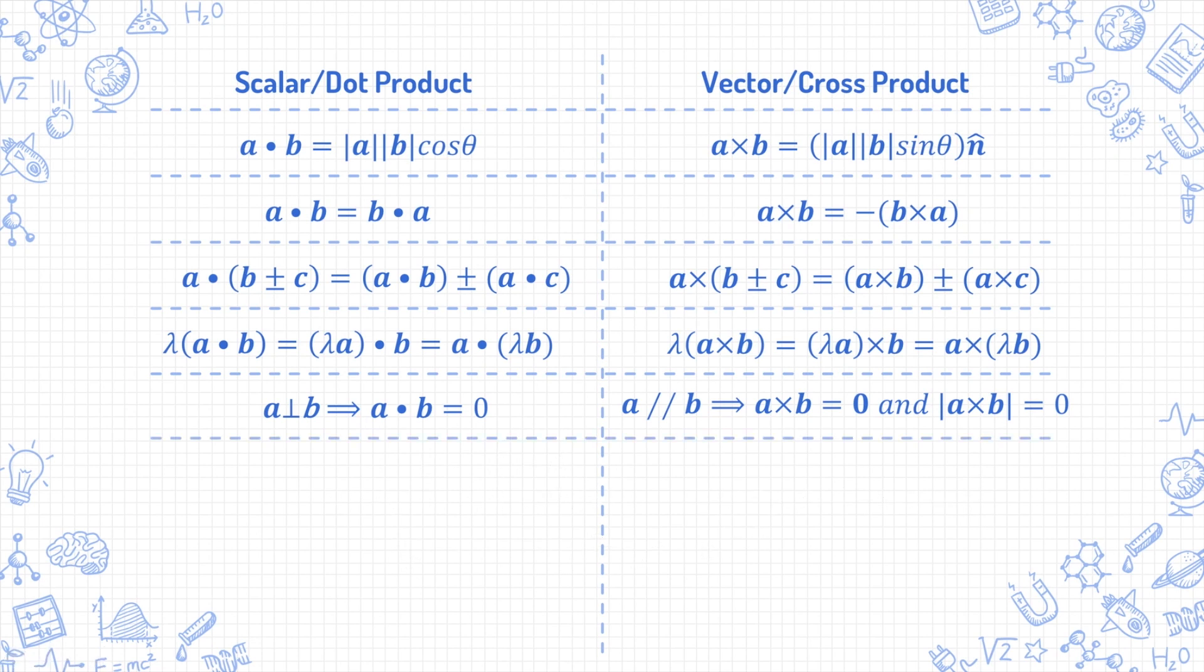What happens when you take the dot product of a vector with itself or the cross product of a vector with itself? The angle theta between a vector and itself is 0 degrees. So, if you take a dot a, cosine of zero degrees equals to 1. So, a dot a equals to mod a mod a times 1, which is just mod a square. Conversely, if you need to express the magnitude of any vector in terms of a dot product, mod a equals to the square root of a dot a. These are potentially useful for solving proof questions involving vector algebra.